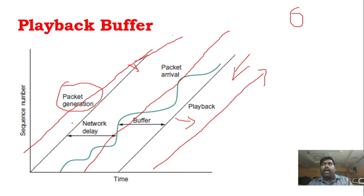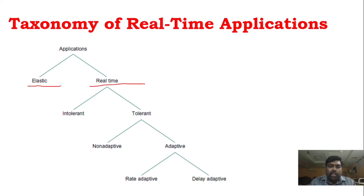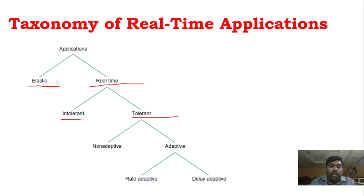If there is packet loss, that also becomes a concern. Applications can be classified as elastic (non-real-time) and real-time. Within real-time applications, we can further see tolerant and intolerant classifications.